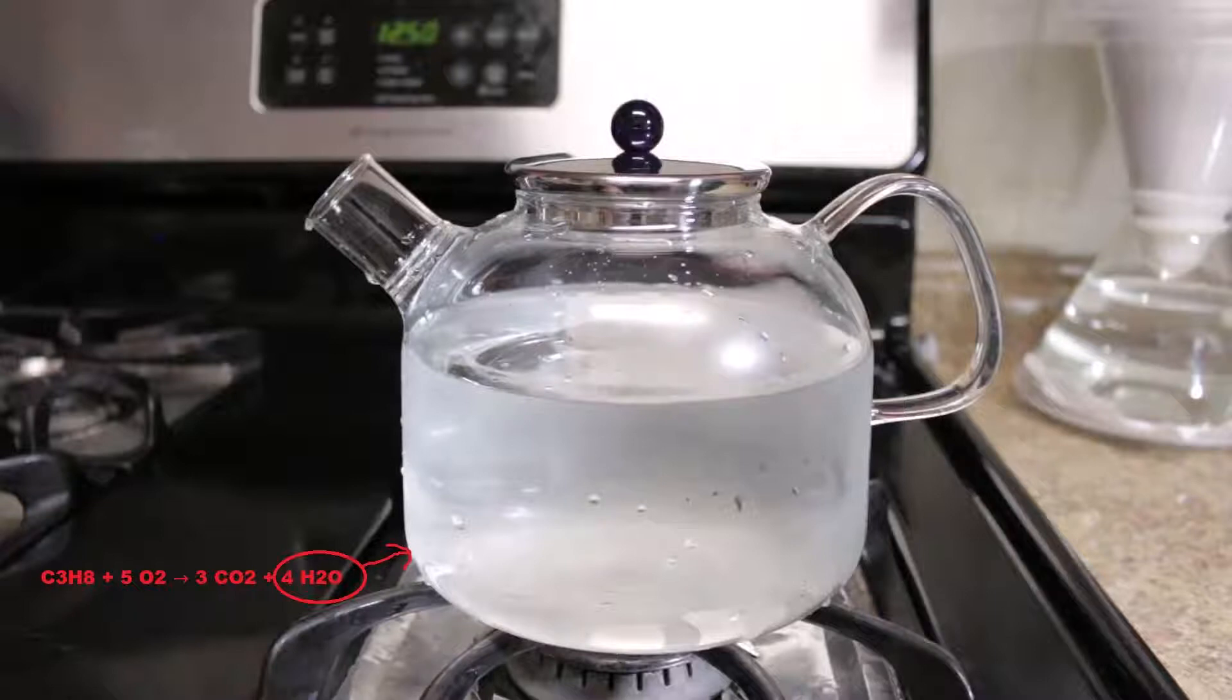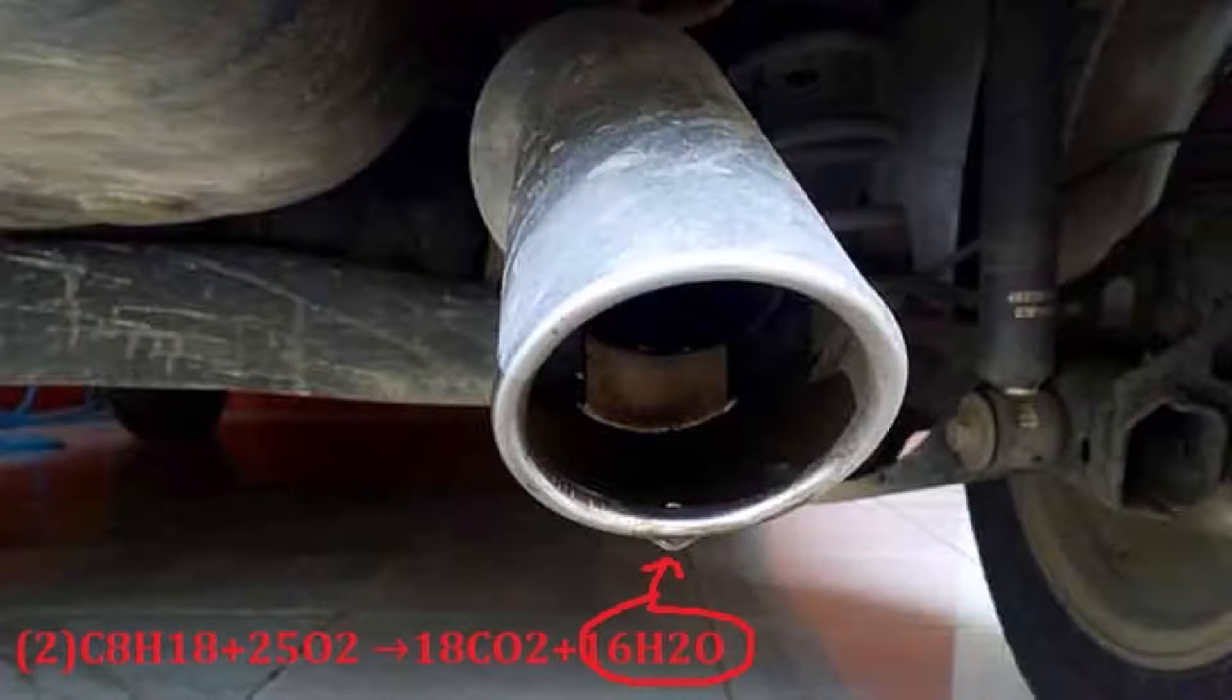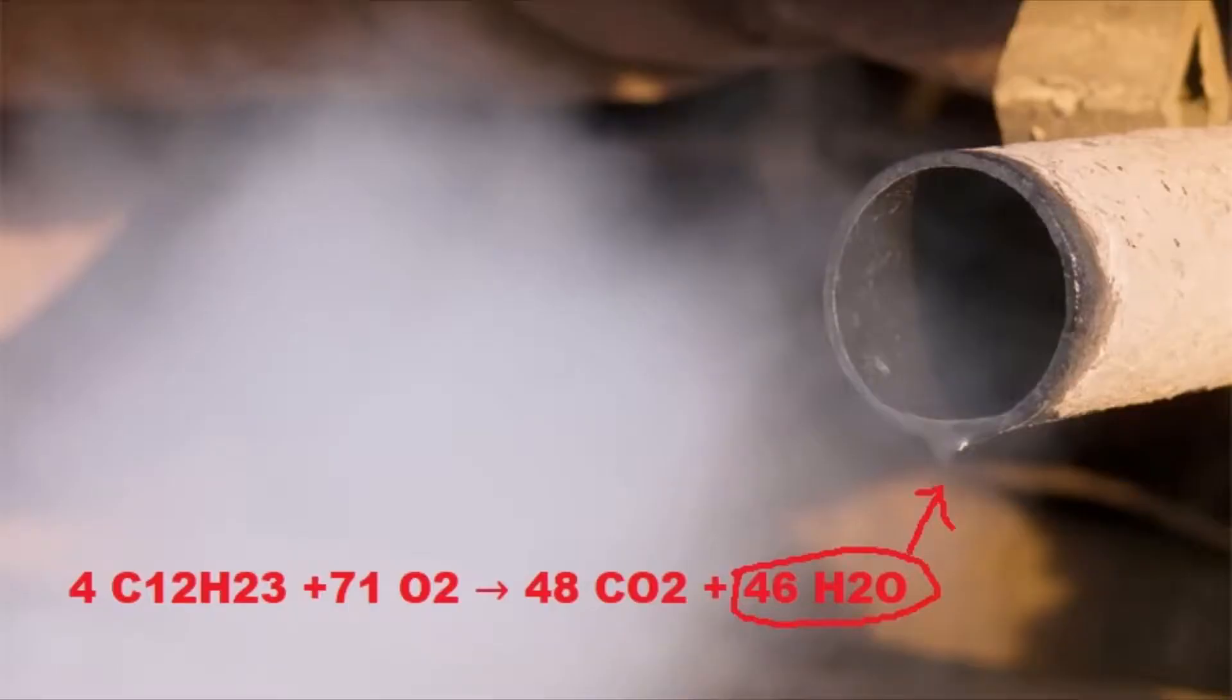The tailpipe water dripping is the result of condensation of water vapor in the exhaust gases from burning hydrocarbon fuels such as gasoline, diesel, or cooking gas. So you have nothing to worry about. To get a closer idea of the phenomenon, let's look at the chemical equation of burning hydrocarbon fuels.